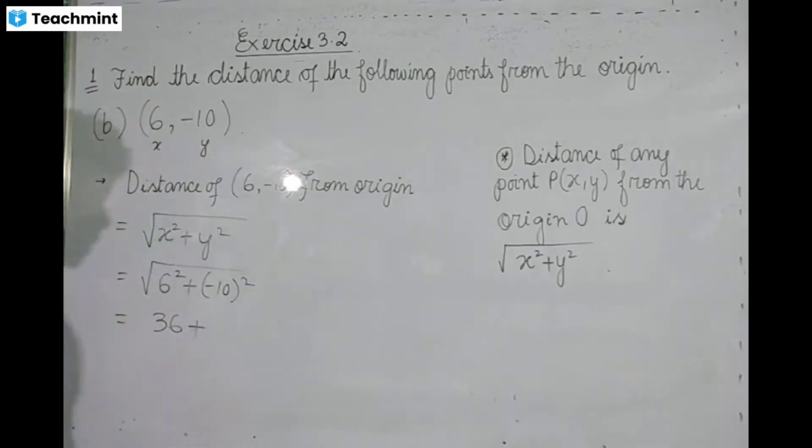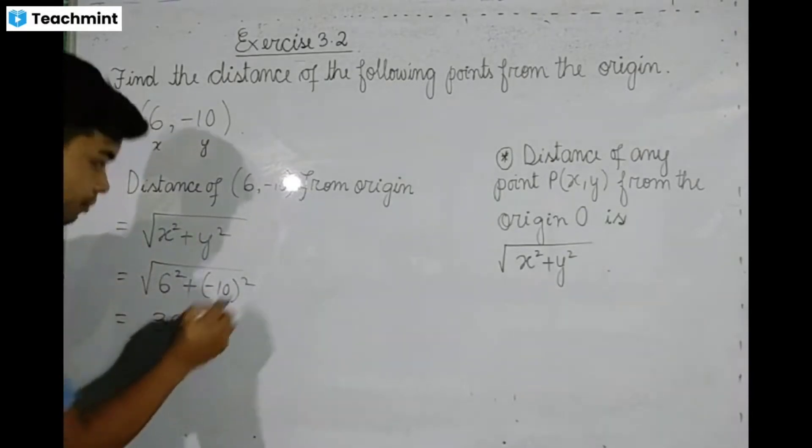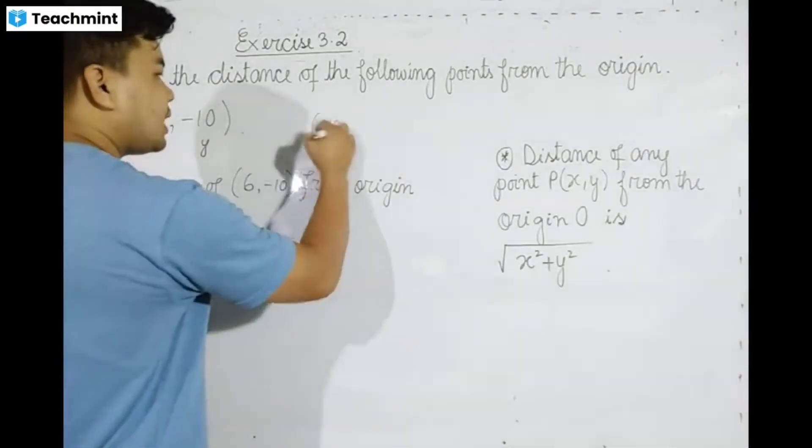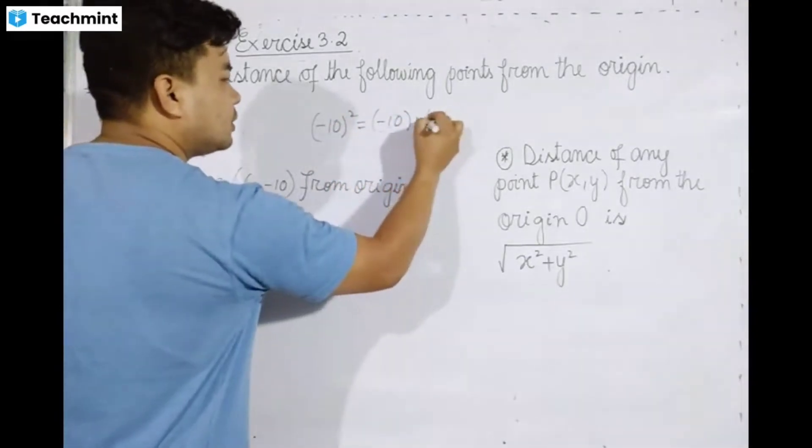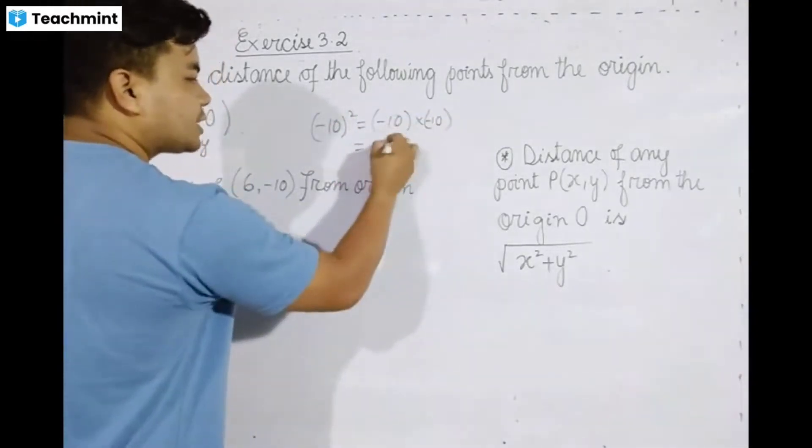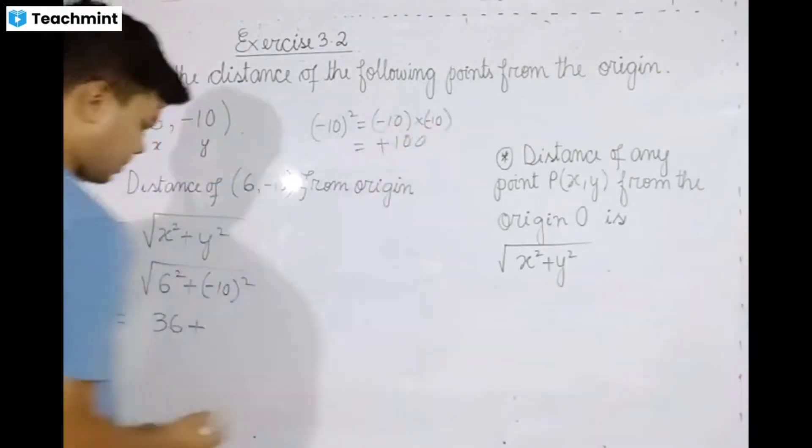For (-10)², that's (-10) whole squared. (-10)² equals (-10) into (-10). Minus times minus equals plus, so we get 100.